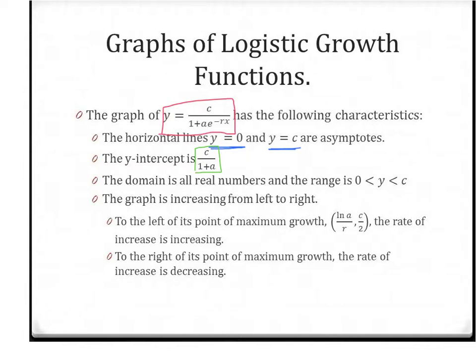The graph we'd say is increasing the entire time. We are gaining in our population. To the left of the point of maximum growth, the rate is increasing more rapidly. And to the point of the right of the maximum growth, the rate is increasing less. And so our point of maximum growth, ln A over R is our x, and C over 2 is our y. So let's try to apply all of this to a graph. Make sure you have all that written down.